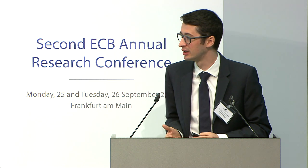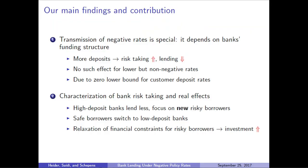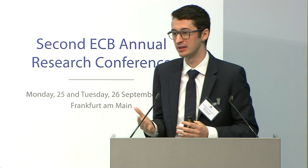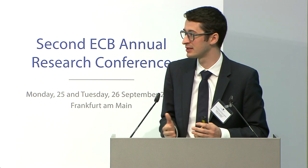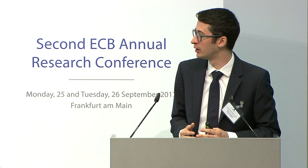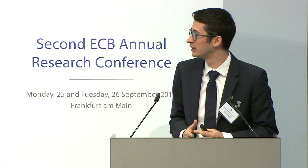Once we've established these findings, we try to dig a bit deeper and talk about how these risks are effectively materializing and what the impact is for the real economy. One of the things we observe is that while high deposit banks indeed seem to lend less and take on more risks, they also seem to focus on new risky borrowers — borrowers that were not active in the market we're studying before rates became negative. This already seems to indicate that there might be some bright side to this increase in risk-taking once rates become negative, namely that banks that were more constrained in the past now seem to be able to get access to bank loans.